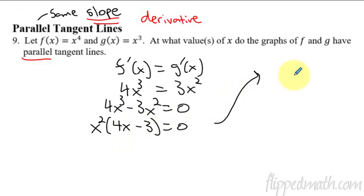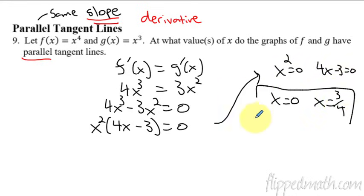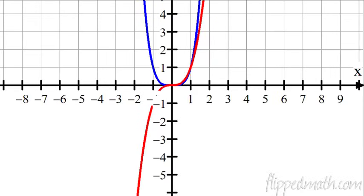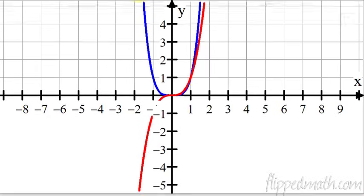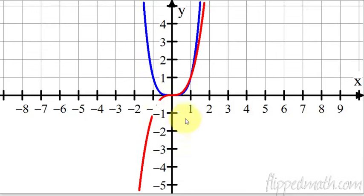So 4x squared and then 4x minus 3. And then use zero product property. I'll come up here now. Run out of room. So I'm going to have x squared equals zero or 4x minus 3 equals zero. Solve them both. You get x equals zero or x equals, add 3 divide by 4, 3 fourths. So what happens at two places? At those two places, x equals zero and x equals 3 fourths, these graphs, x to the fourth and x cubed, will have parallel tangent lines.